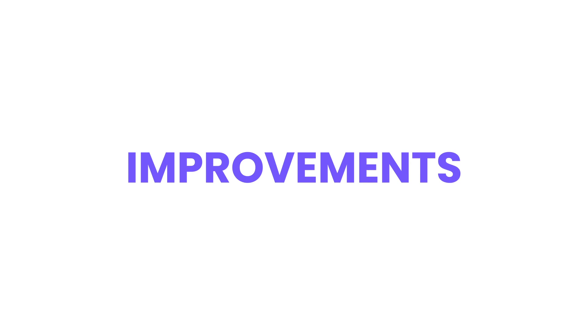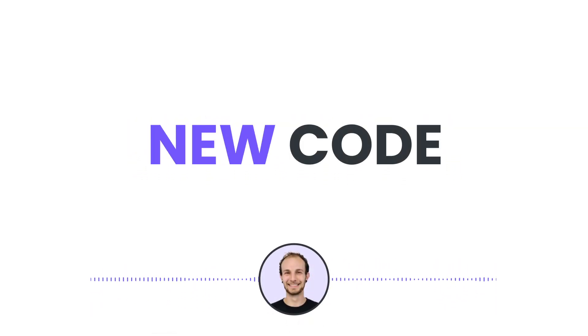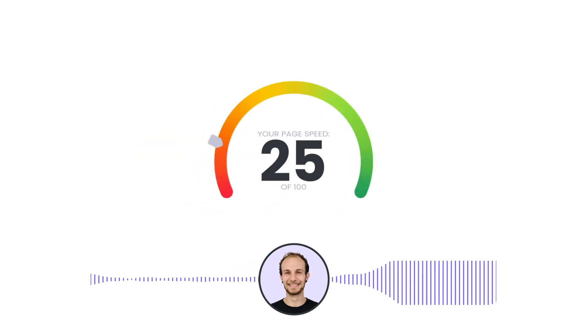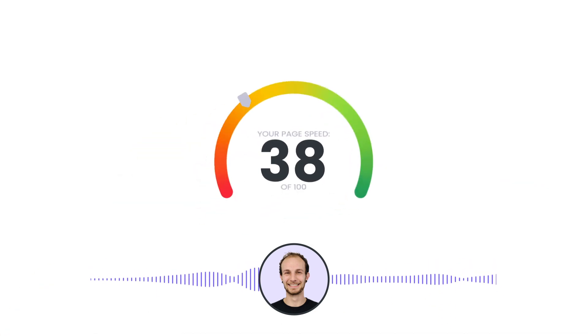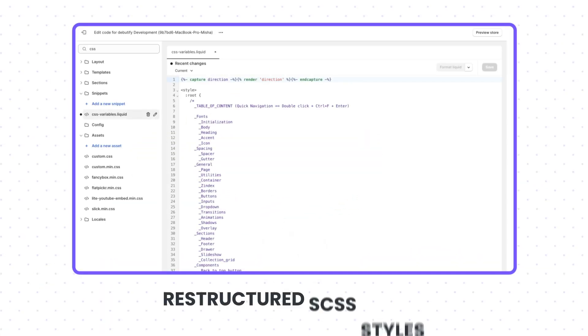Now let's move on to the improvements. We've completely revamped the code for better performance. With an optimized setup, your Shopify admin score can reach a whopping 90-page speed score.